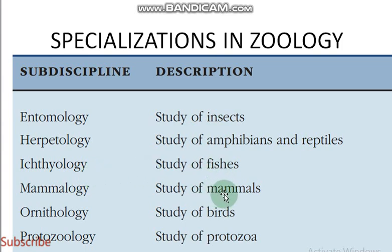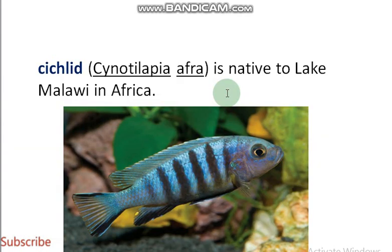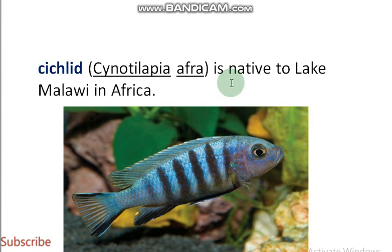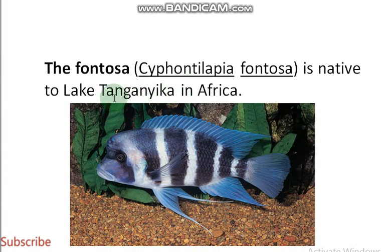Entomology is the study of insects. Herpetology studies amphibians and reptiles. Ichthyology is the study of fishes. Mammalogy is the study of mammals. Ornithology is the study of birds. Protozoology is the study of protozoans. The cichlid's scientific name is Cynotilapia afra, which is native to Lake Malawi in Africa. In the exam, a question may ask which lake cichlids are native to. The Cyphotilapia frontosa is native to Lake Tanganyika in Africa.